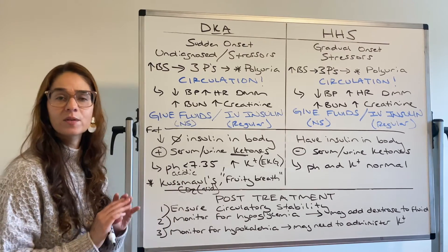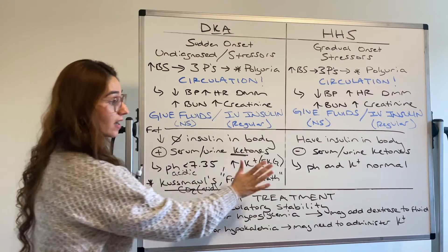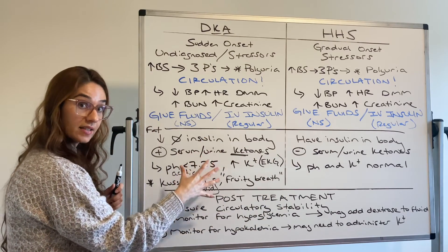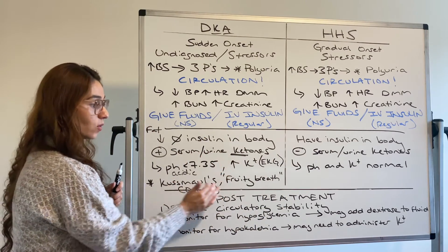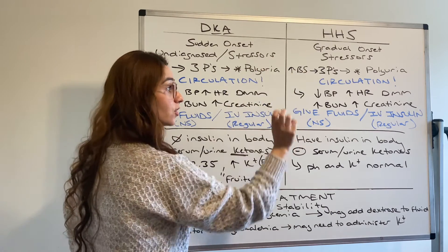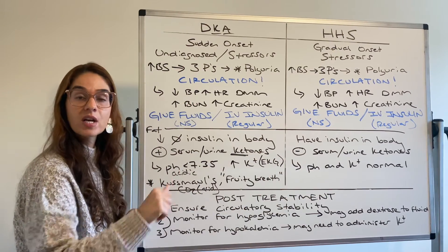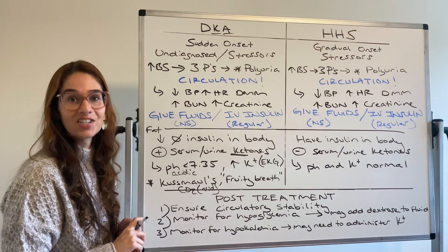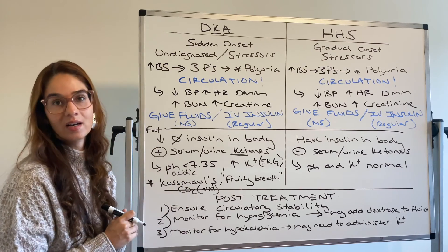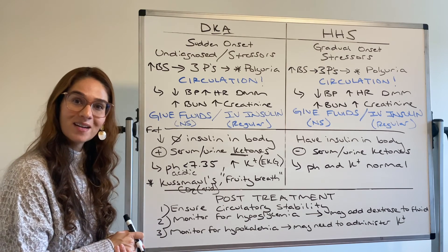I hope this helped. It was a quick video on differentiating DKA versus HHS. Focus on this: when you have a difference in pH and potassium, and coping mechanisms like Kussmaul's and fruity breath, you need to be thinking DKA. If you have high blood sugar and three Ps but no ketone production, no changes in pH, no changes in potassium — you should be thinking HHS. That's a good tidbit for differentiating those two disorders. If this helped you, I hope you help somebody else. Take care.